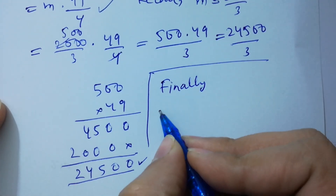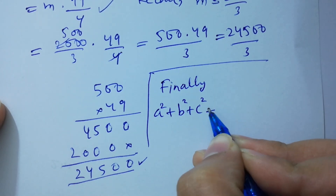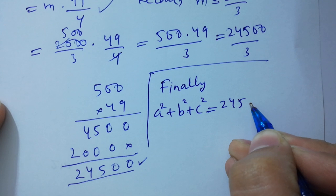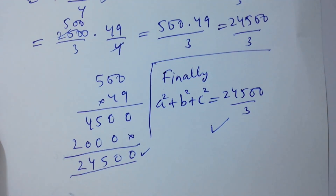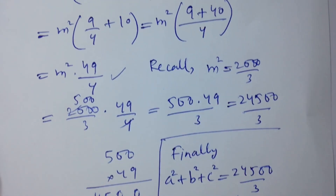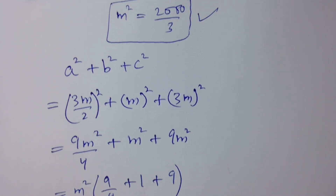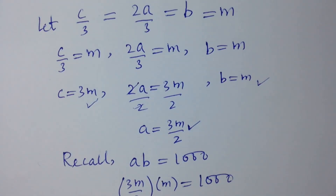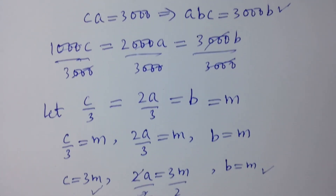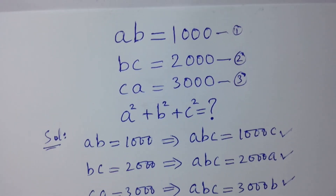So finally, A squared plus B squared plus C squared equals 24500 over 3. Thanks for watching this video. Please subscribe to this channel to get notifications of my new videos, and don't forget to share this video with your classmates and friends so they can also benefit. You can also visit the playlist of this channel to learn more. Okay, bye.